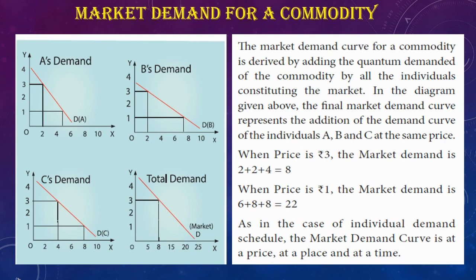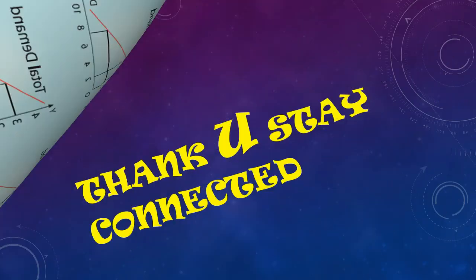When price is rupees 3, the market demand is 2 + 2 + 4 = 8. When price is at 1, the market demand is 6 + 8 + 8 = 22. As in the case of individual demand schedules, the market demand curve is derived at the same price for all individuals in the market.